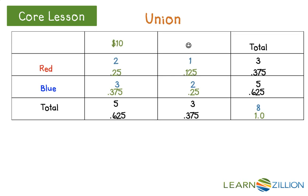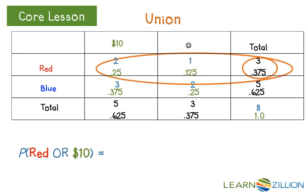Now let's move on to union. There are three red envelopes out of eight, five lucky envelopes out of eight, but we need to subtract from that the two red and lucky envelopes so we don't double count them.